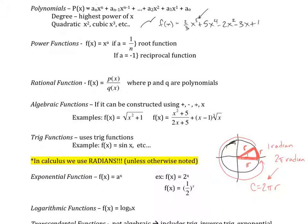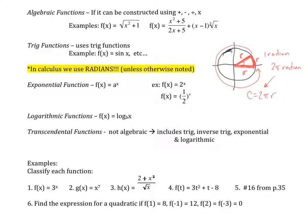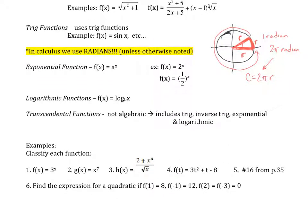Okay, now. Let's see. Let's move this up. Okay, an exponential function. We've got f of x equals a to the x power. Examples would be two to the x. One half to the x.